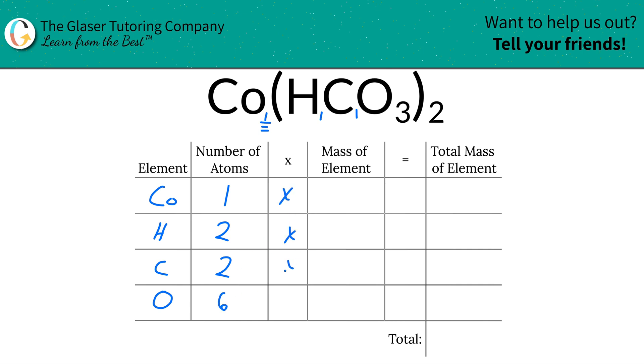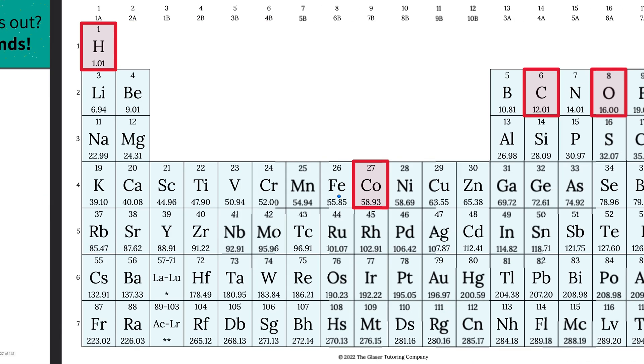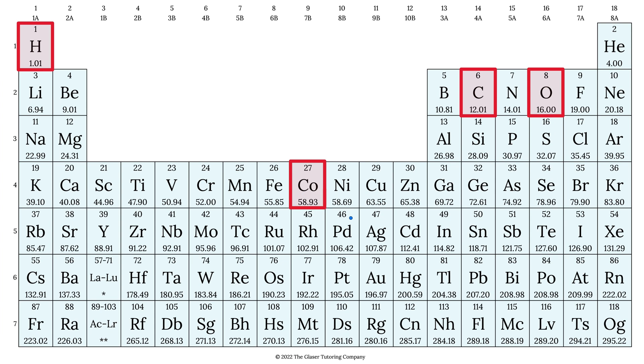Then what we're going to do is we're going to take those number of atoms now. We're going to multiply it by the mass of each particular element. Now, these masses are found on the periodic table, so let's take a look. So cobalt here is 58.93, hydrogen is 1.01, carbon is 12.01, and oxygen is 16.